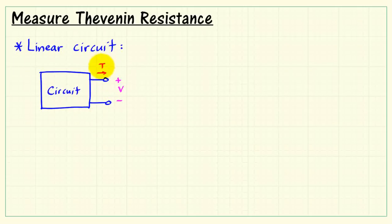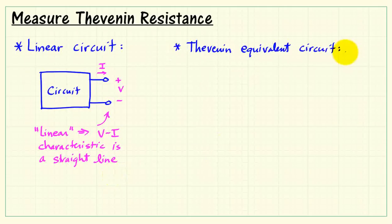The terminal voltage and current would be labeled in the standard configuration, as I'm indicating here. Linear means that the voltage current characteristic is a straight line.